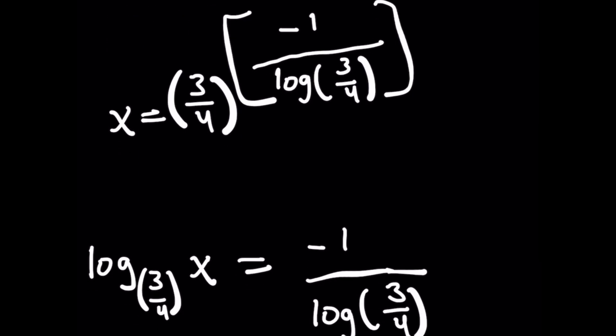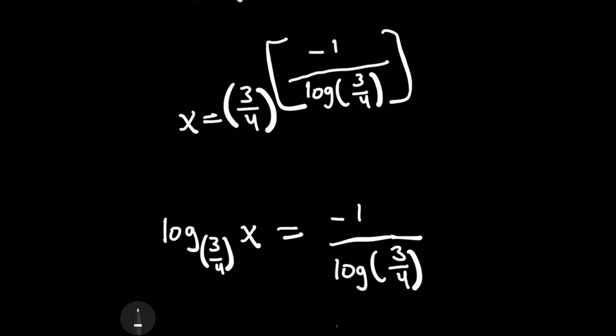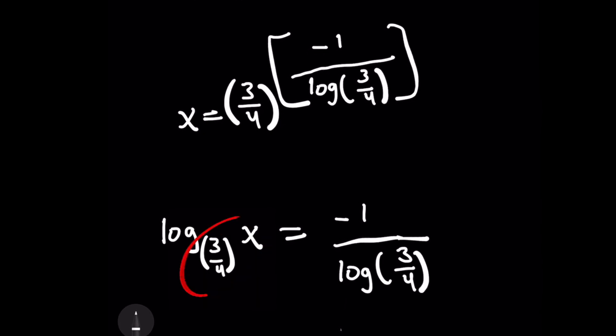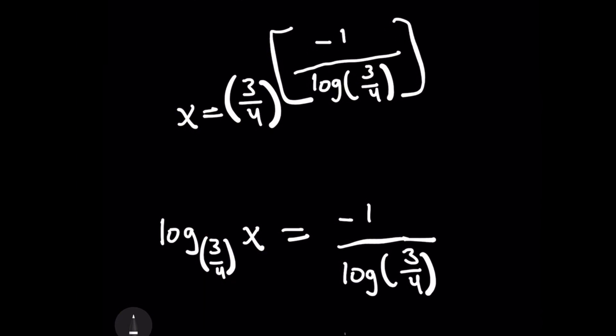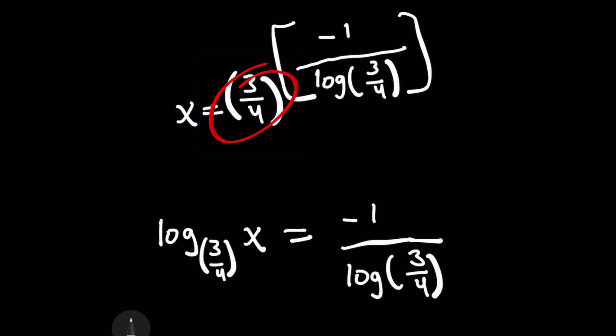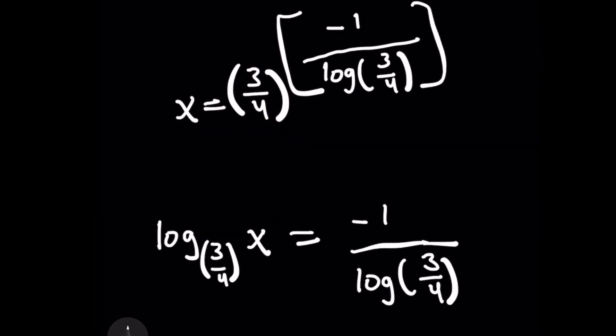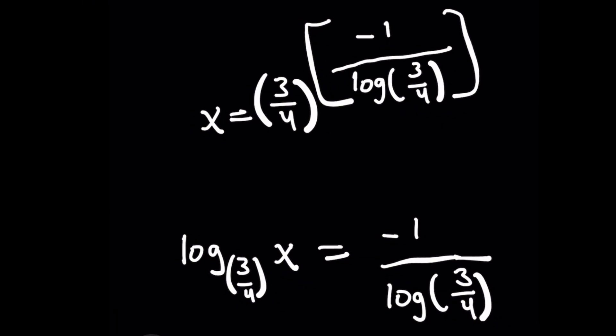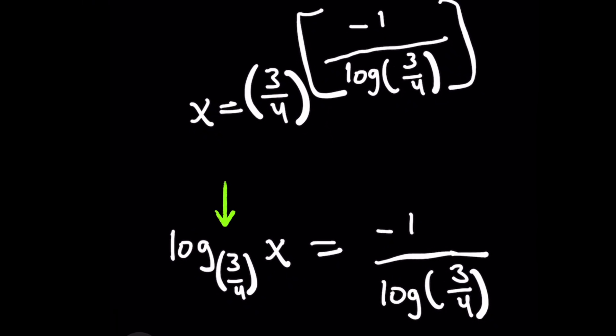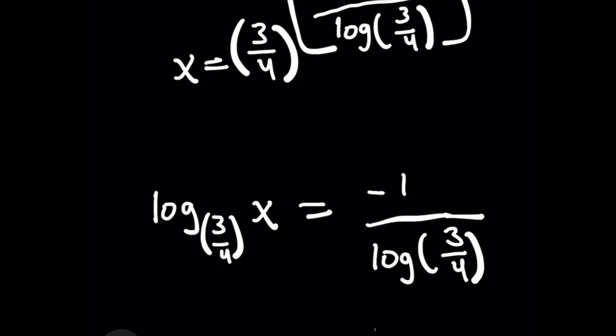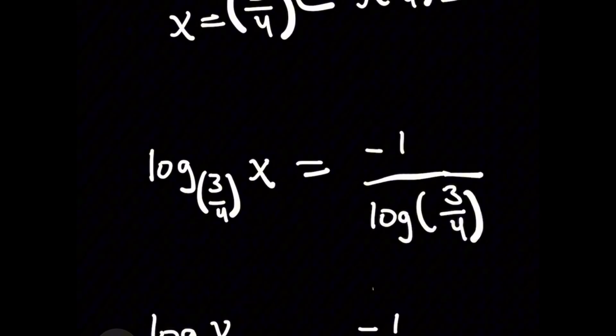It's no longer x. It's 3 over 4. So why don't I choose that as my base and take the log of both sides with base 3 over 4? That's going to simplify the right-hand side because log base 3 over 4 of 3 over 4 to something is that something, giving us negative 1 over log of 3 over 4.